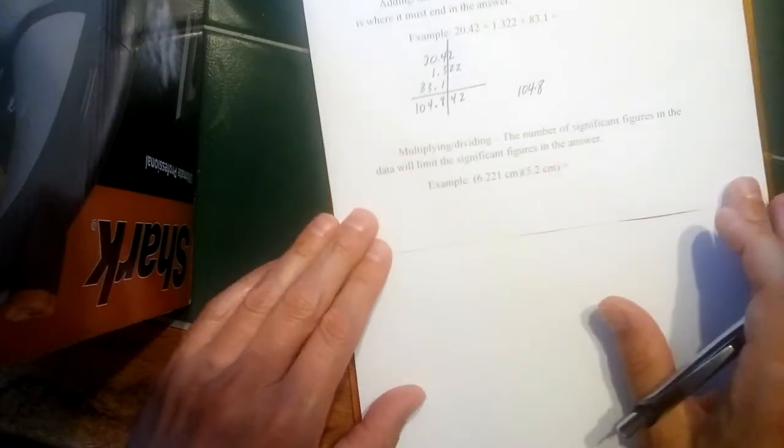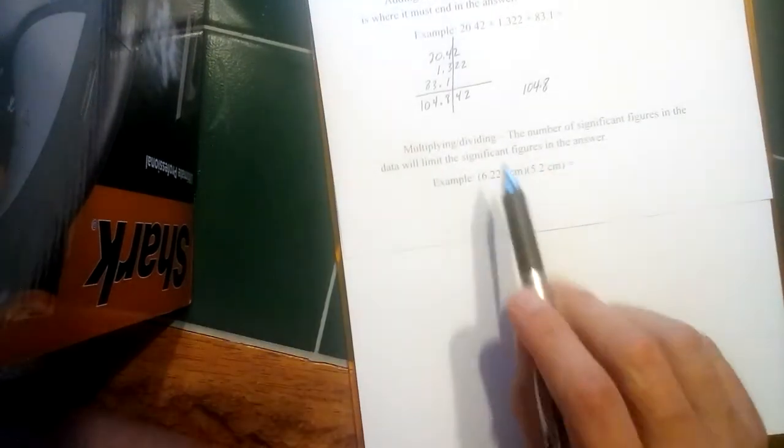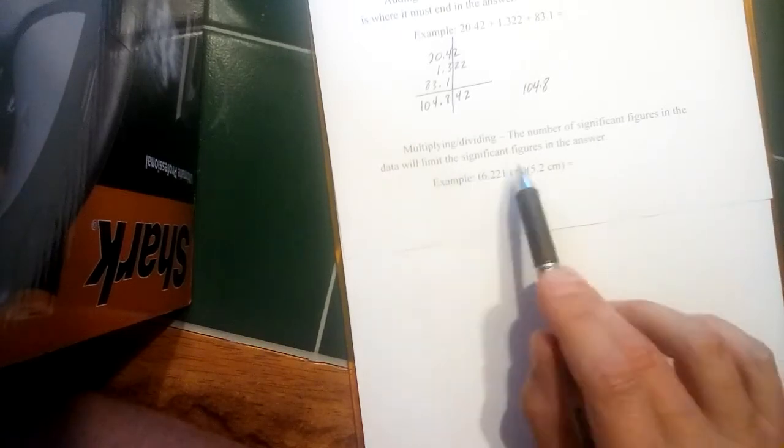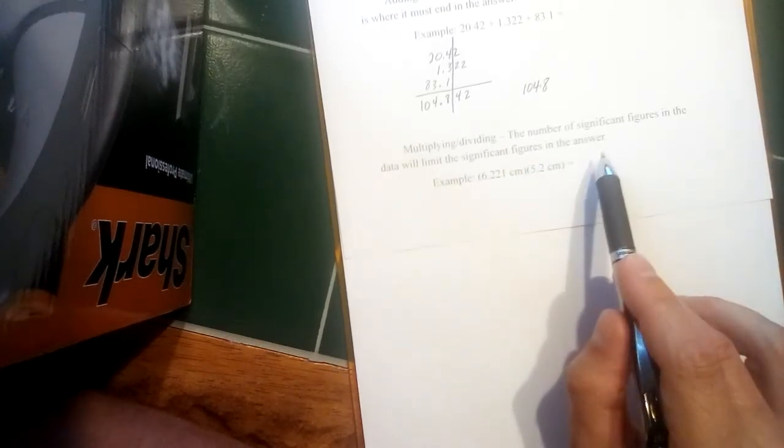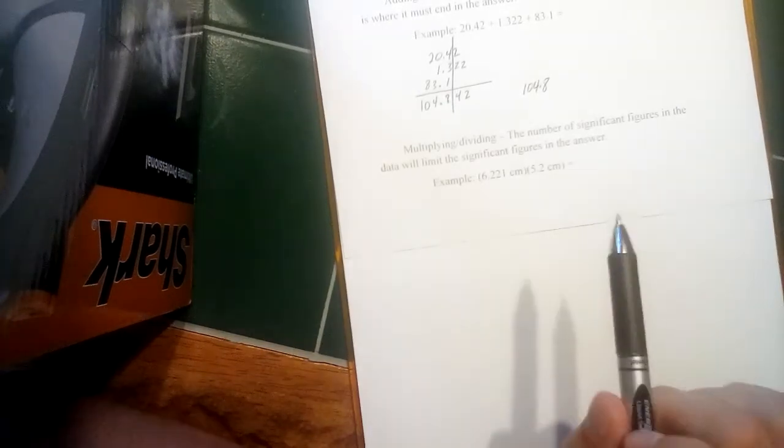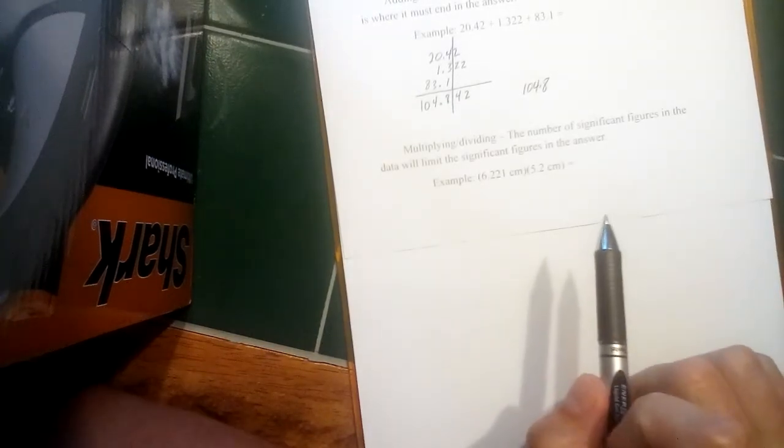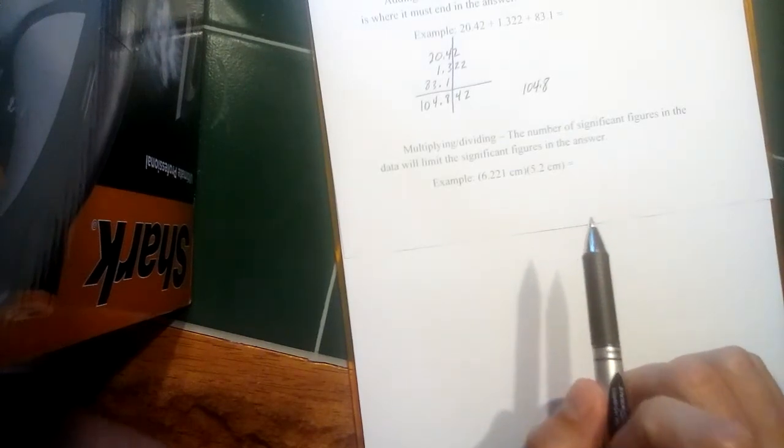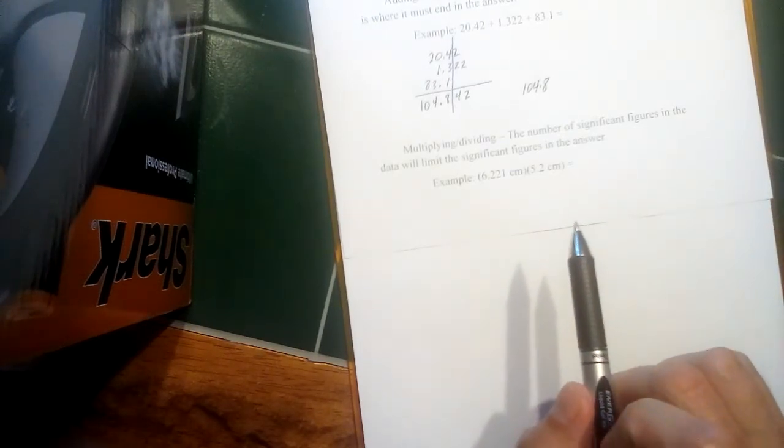The rule is different if we either multiply or divide, and for multiplying and dividing, the rule is the number of significant figures in the data will limit the significant figures in the answer. Basically the way we apply this is you count the number of significant figures in each individual piece of data. Whichever piece of data has the fewest number of significant figures, that is how you will round your answer.